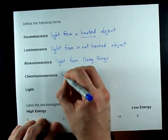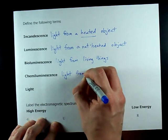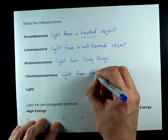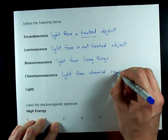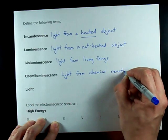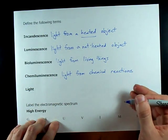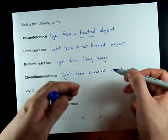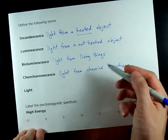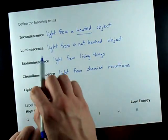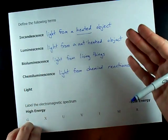Chemiluminescence — hopefully it shouldn't be a surprise — is light from chemical reactions. Things like fire. After all, fire itself is a chemical reaction, so it's a form of chemiluminescence, although there's also heat given off.